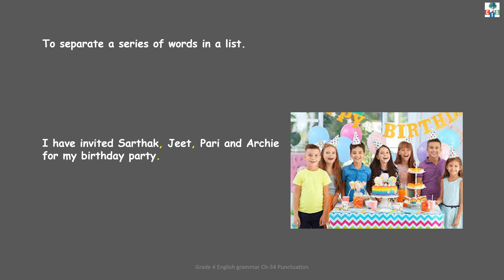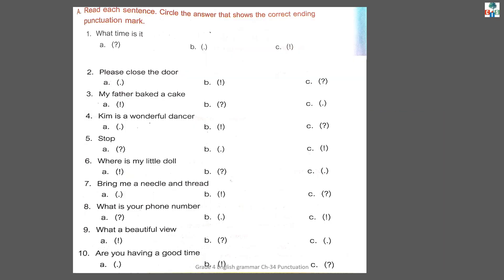Now let's move towards our exercise. See page number 125, exercise A. Read each sentence and circle the answer that shows the correct ending punctuation mark. You have to circle the correct punctuation mark after each and every sentence. See the first one: 'What time is it?' First identify what kind of sentence it is — exclamatory, interrogative, or assertive? Yes, it is an interrogative sentence. So the correct answer is A — you put a question mark. 'What time is it?'